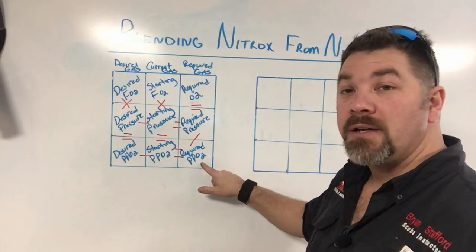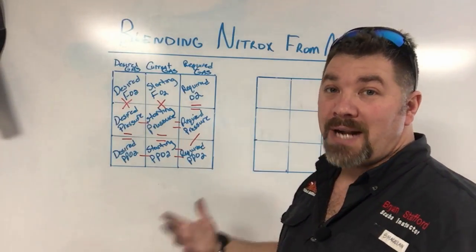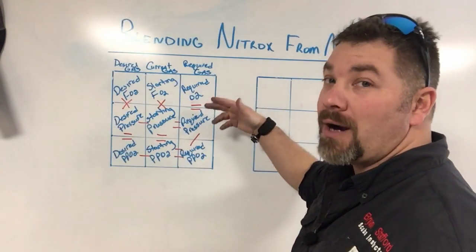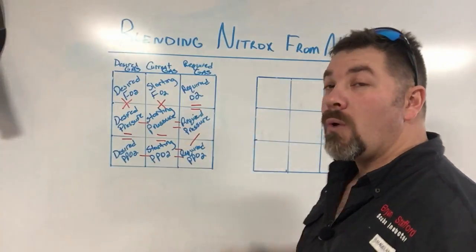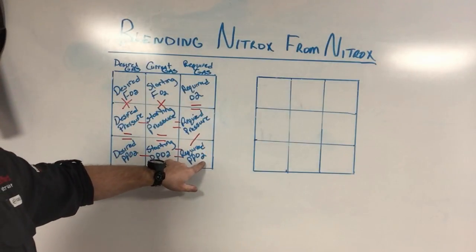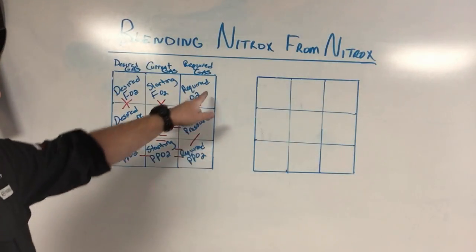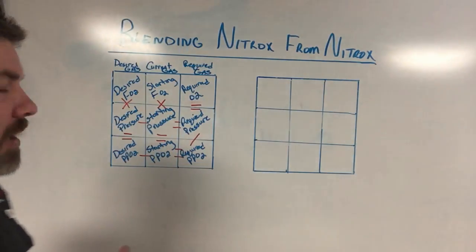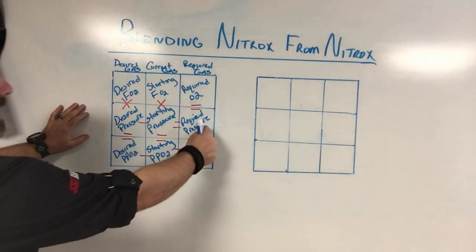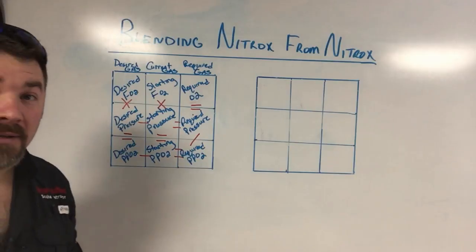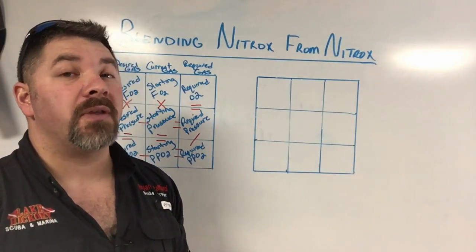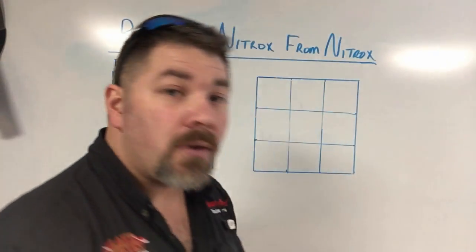The required pressure is what you need to add into the cylinder to reach the required level, and then the required O2 fraction for that blend. To get the required O2, take the required PPO2 and divide it by the required pressure. There are also two subtraction steps — to get those numbers you subtract across the rows, which will become clear as we fill in the block. We'll do this in both Imperial and metric; get a piece of paper, pencil, and a calculator.